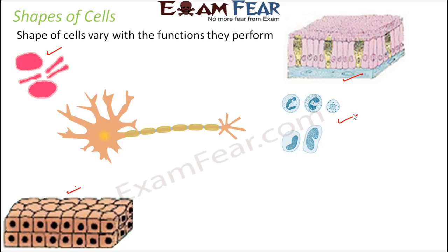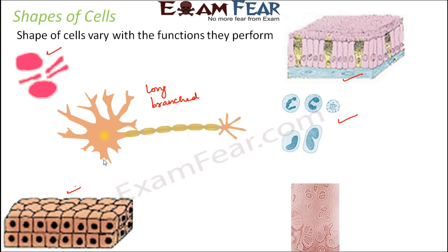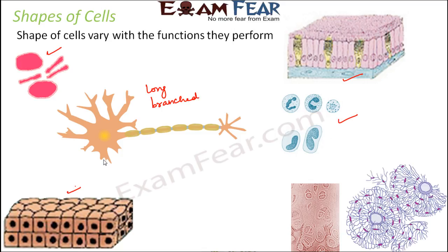Then you have the nerve cell, or neuron. The nerve cell is a long cell and it is also branched — you can see branches coming out of the nerve cells. Then if you look at cartilage and bone cells, this is how they look: the bone cells or cartilage cells.